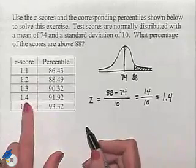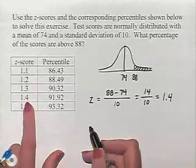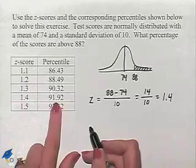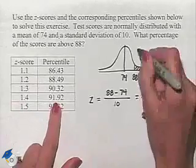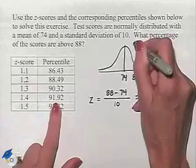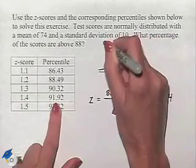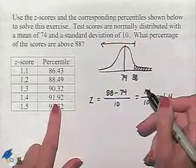The percentile related to a Z-score of 1.4 is 91.92. What that's telling us is that if we take all of the area under the curve that's to the left of that score, that would be 91.92 percent.